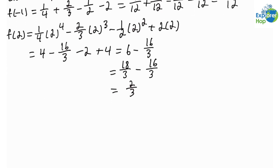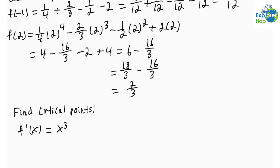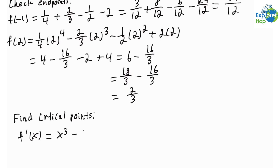Now we want to check the critical points. Let's first find the critical points. To do this, we want to find the derivative of f, then set the derivative equal to 0. Applying the differentiation rules, we get that f'(x) = x³ − 2x² − x + 2.